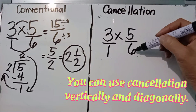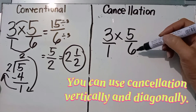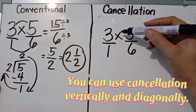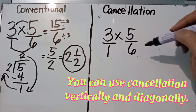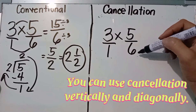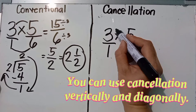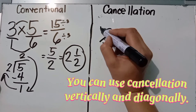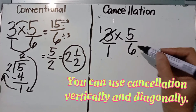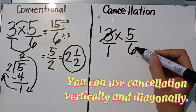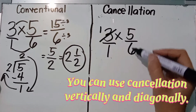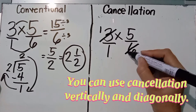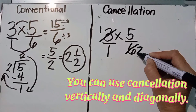Three and six have a common factor of three. Dividing: three divided by three equals one — cancel and write one. Six divided by three equals two — cancel and write two. Now check if there are any other common factors. There are none.